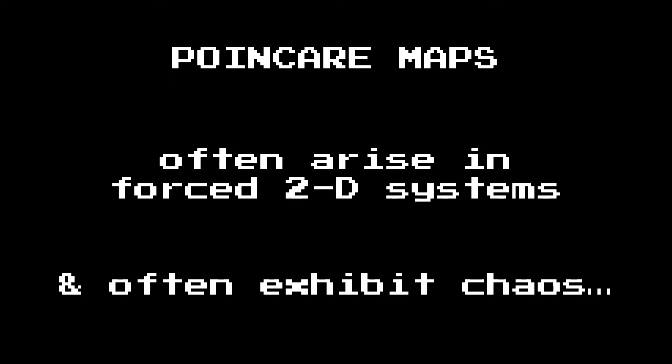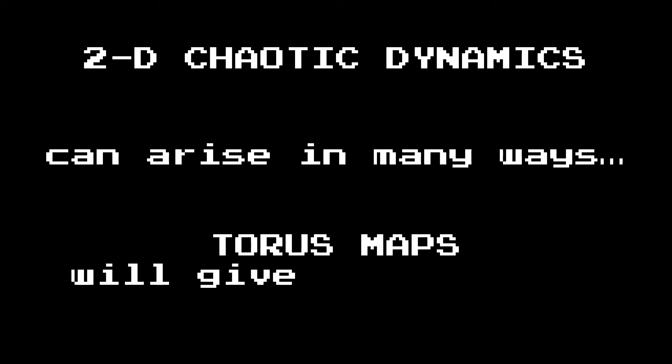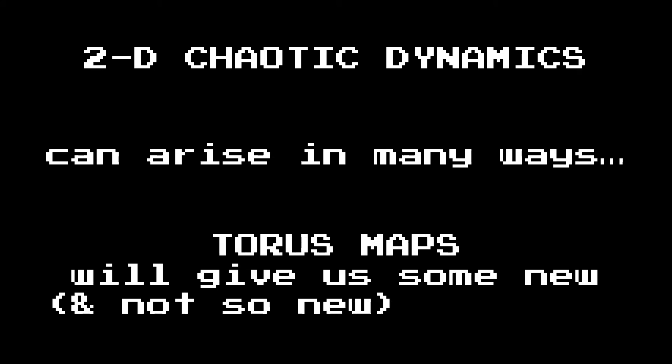We've seen in this chapter several examples of chaotic two-dimensional dynamical systems, but these could arise in a number of different ways. One way that we're going to look at now is something called a torus map, and this is going to give us some new examples.